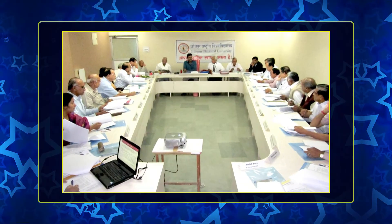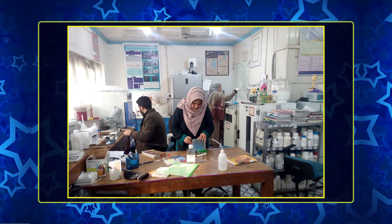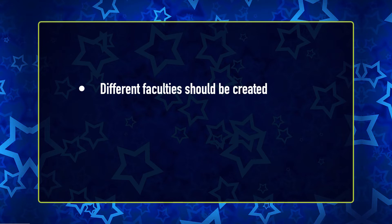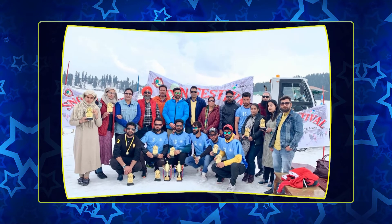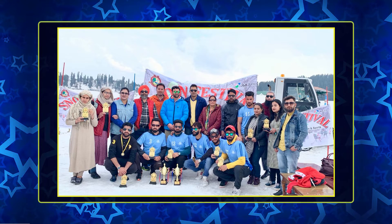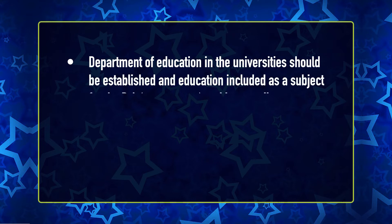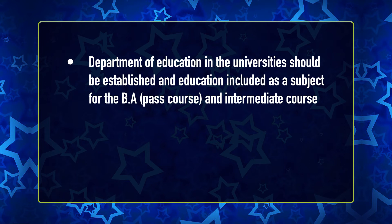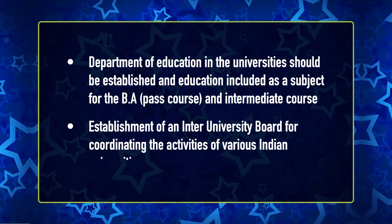Further recommendations on internal administration included: seventh, an academic council and board of studies should be set up to settle academic questions pertaining to courses of study, examinations, degrees and research; eighth, different faculties should be created; ninth, a full-time salaried vice chancellor should be appointed; tenth, a director of physical training should be appointed to attend to the health and physical welfare of students; eleventh, a department of education should be established in the university, with education included as a subject for the BA pass and intermediate courses; and twelfth, an inter-university board should be established for coordinating the activities of the various Indian universities.